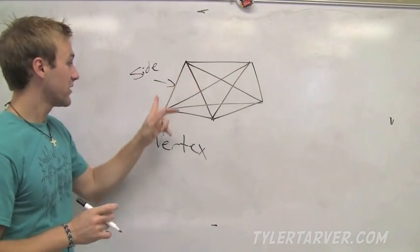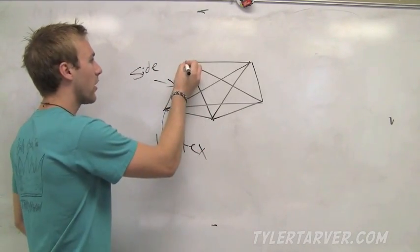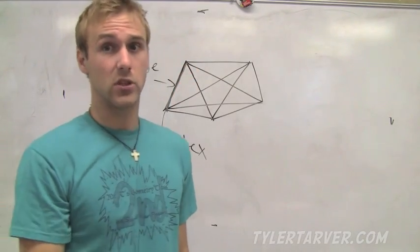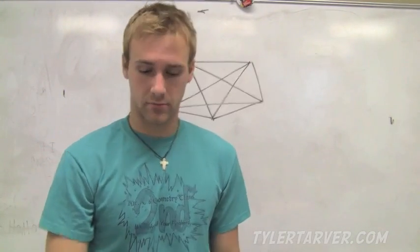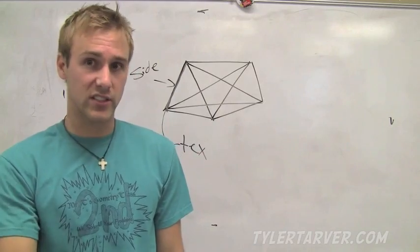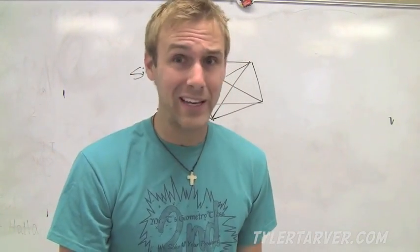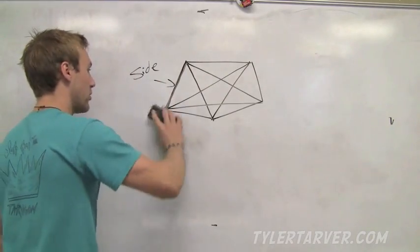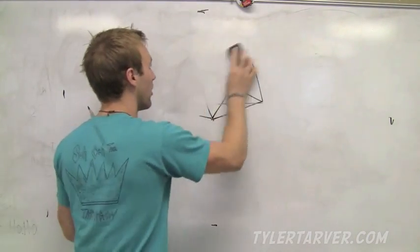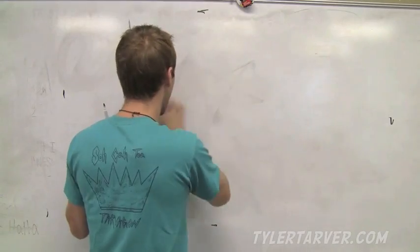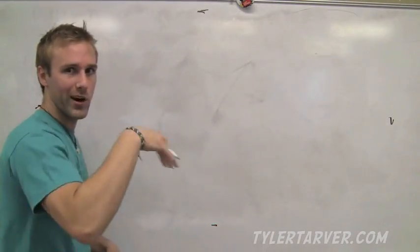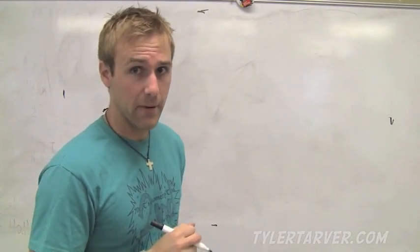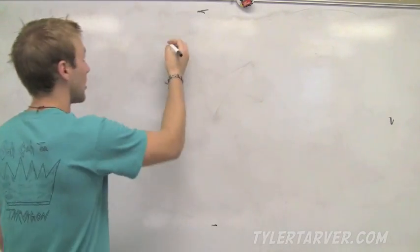Next thing, when you go from one vertex to another vertex across the polygon, it is called the diagonal. Diagonal you usually think of like this, sometimes it goes straight down, depends on how those vertexes are situated. Anywhere you can go across this sucker.